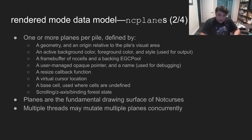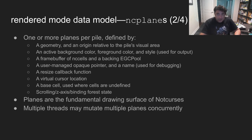What are these planes? They're the fundamental drawing surface of NotCurses. All output is placed onto planes. Each NotCurses context starts with the standard plane, which is always the size of the visual area and cannot be destroyed, reparented, nor moved along the X or Y axis — thus we always have at least one pile. A plane is defined by its geometry and its origins, its active colors and style, a matrix of cells and an associated EGC pool.